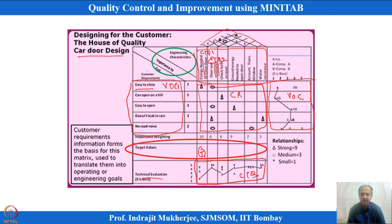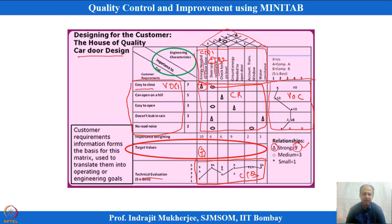CTQ 1 is energy needed to close the door, and CTQ 2 is door seal resistance. Easy to close is highly related with energy needed to close the door — that is why a delta symbol is used, representing a strong relationship rated as 9. This is based on previous evidence, technical literature, or expert opinion.